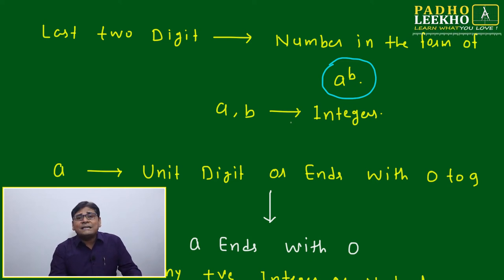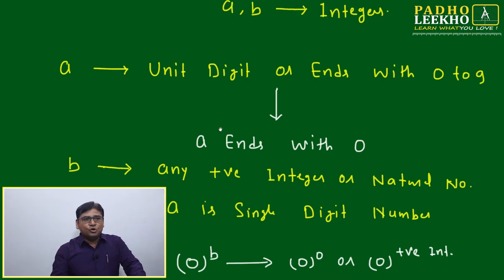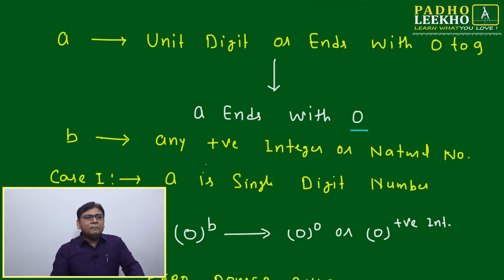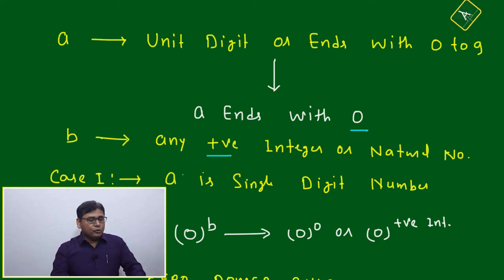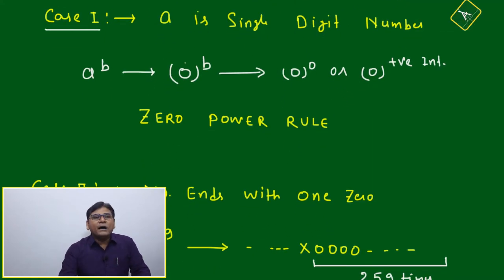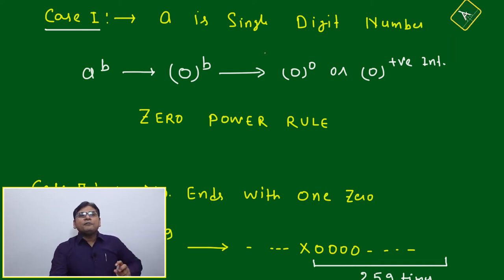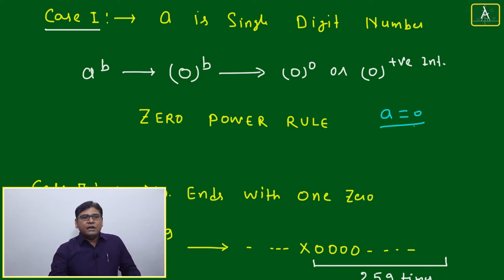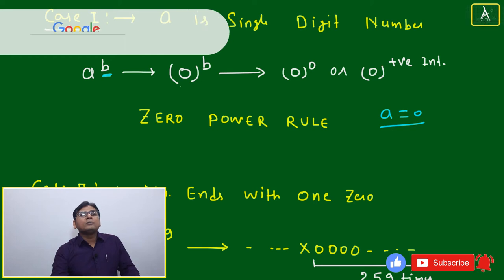Here A is the unit digit, ending with 0 to 9, and B can be any positive integer or natural number. Case 1: when A is a single-digit number ending with 0, only A equal to 0 is possible.